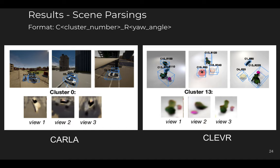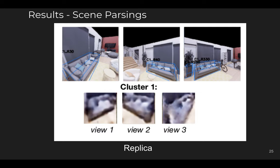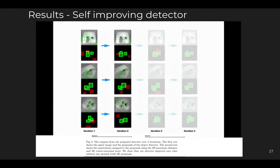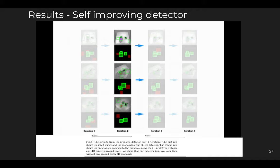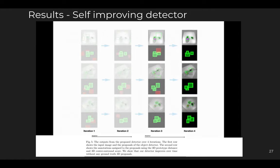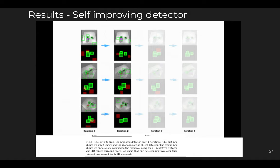Next are scene parsing results, where we show that our model can detect objects and indicate the cluster number — the prototype it matched best — as well as the rotation along the vertical axis that best matches the prototype. This is all learned in a self-supervised way, and we show scene parsing results on the Replica dataset. We also show self-improving detector results across multiple iterations: the green detections are correct ones and the red are pruned detections marked as wrong based on center-surround saliency and prototype matching score.